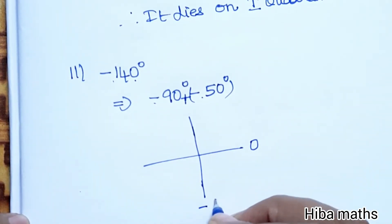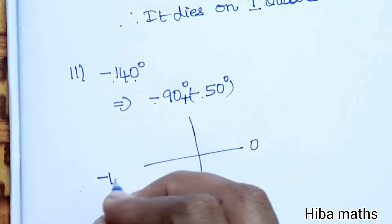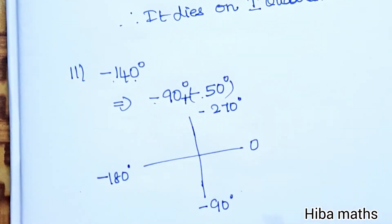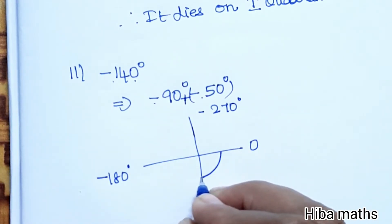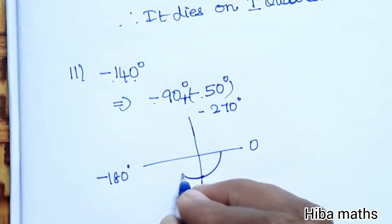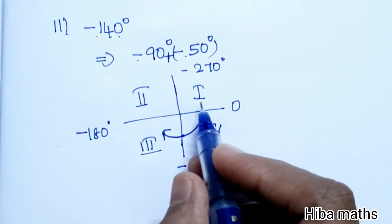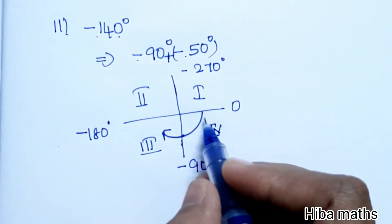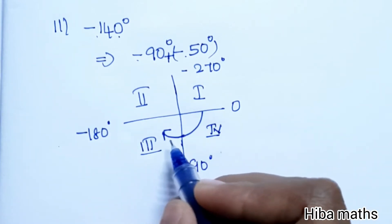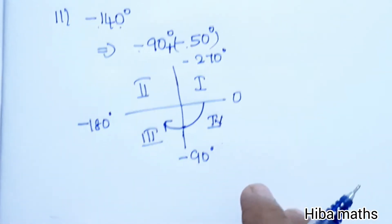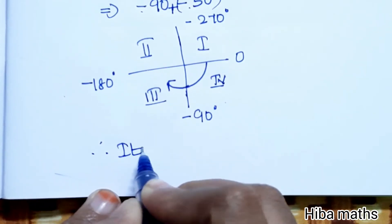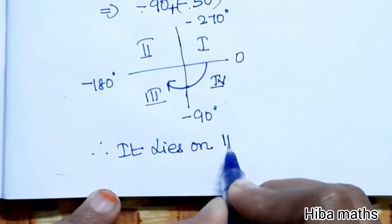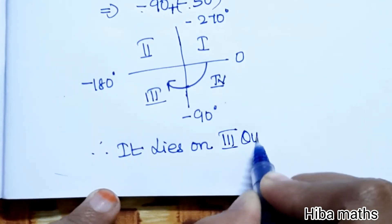Going in the negative direction: 0 degrees, minus 90 degrees, minus 180 degrees, minus 270 degrees. Since 140 degrees is 90 plus 50, and we are moving in the clockwise (negative) direction, we pass the first and second quadrant markers. Therefore, minus 140 degrees lies in the third quadrant.